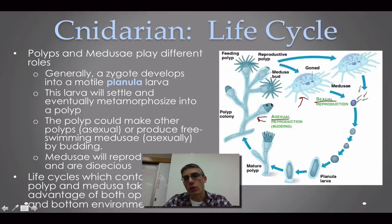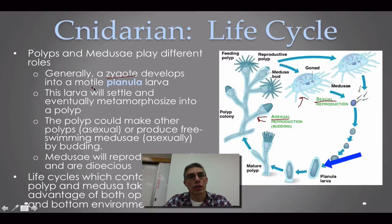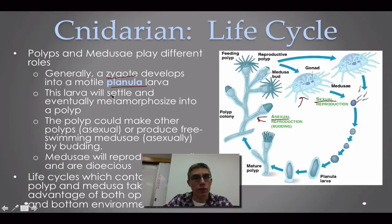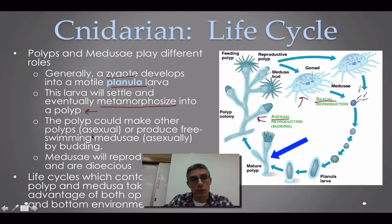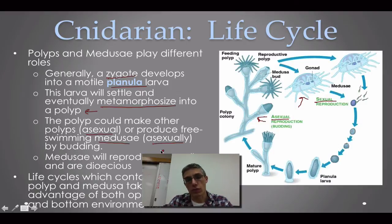Regardless of whether it's a polyp or a Medusa, or a combination of both, they will generally produce a zygote — that fertilized egg — which develops into what we call a planula larvae. This larvae can move from place to place, allowing it to settle in a different part of the environment. Once it settles, it metamorphosizes into a polyp body form. That polyp can make other polyps asexually, or produce free-swimming Medusa by budding — which is still asexual reproduction since it comes from the same animal.